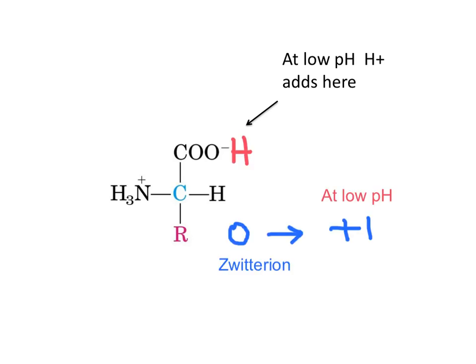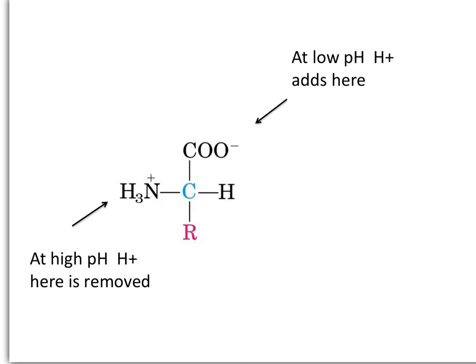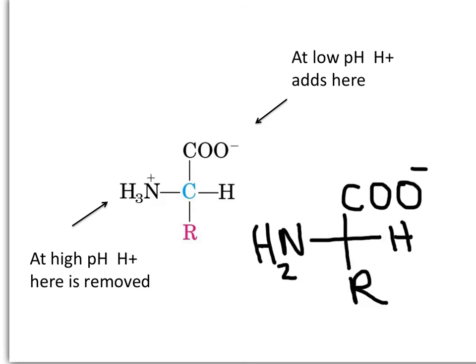By lowering the pH, the net charge of the zwitterion, zero, changes to plus one. When we add the hydrogen to the carboxylate group, we only have one positive charge on the nitrogen. Addition of a base will result in a loss of a hydrogen on the amino group. If a strong solution of sodium hydroxide is added, this amino group will lose one of the protons and now the net charge is going to be negative one.